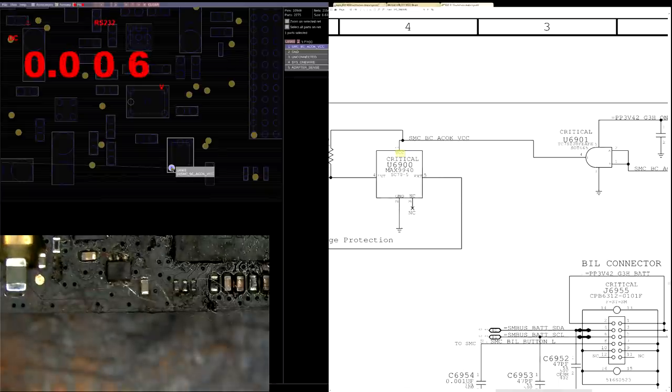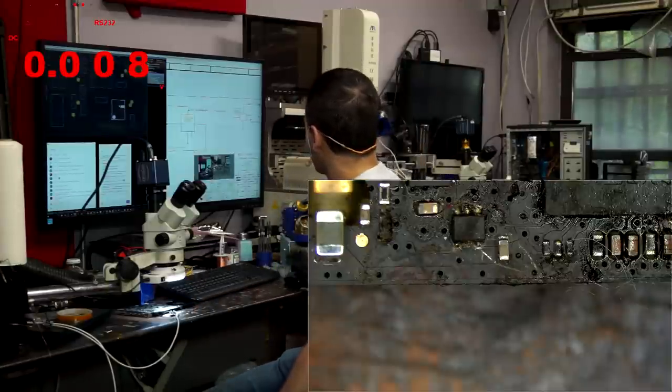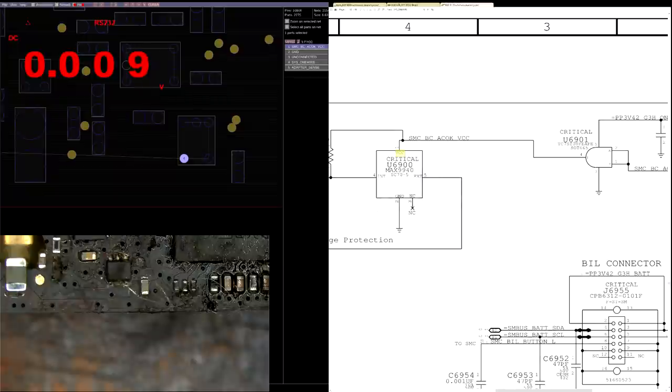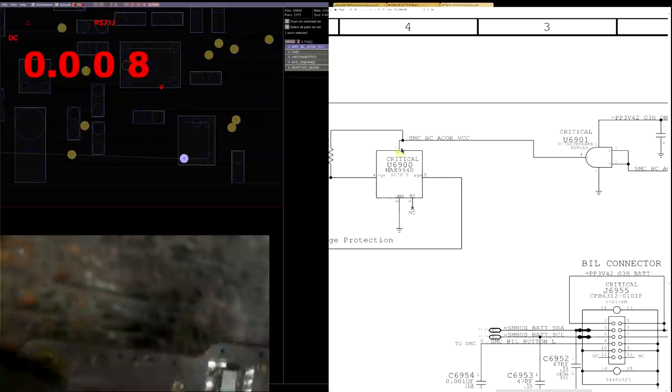So at this point, I would guess that my issue is that my link between U6901 and U6900 is broken. The path between this and this is burned out on the board, which means that we're going to run a little wire from there to there.